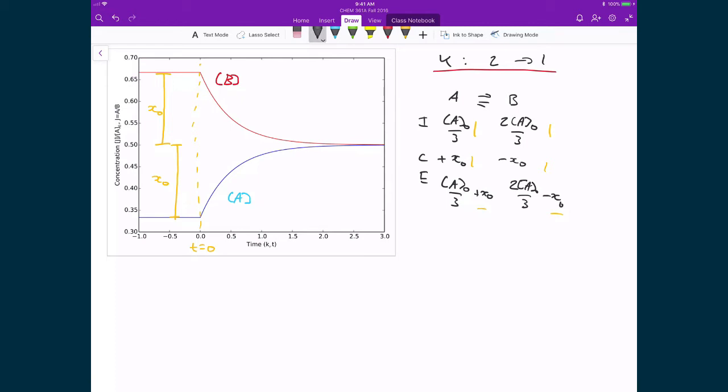So my next step then is just to apply standard equilibrium values. So here is my equilibrium constant at the new equilibrium, and that's equal to the concentration of B at the new equilibrium divided by the concentration of A at the new equilibrium. So my K at this new equilibrium is equal to 1, and that's equal to 2 times A0 over 3 minus X0, and that's divided by concentration of A0 over 3 plus X0.